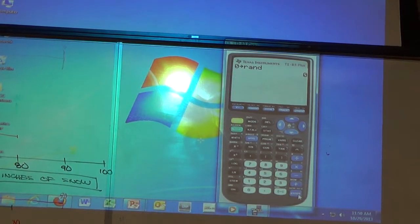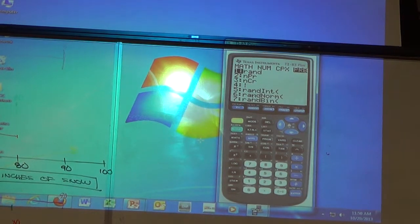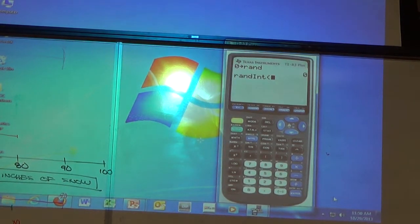Now everybody, math, left. Go down to randint number five. Remember this command, randint? Everybody type one comma six, and then close it all in. Once you've done that, press enter.